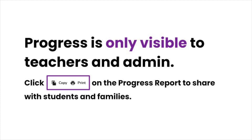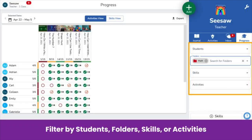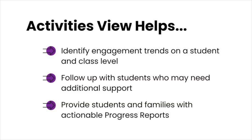Note that progress is only visible to teachers and administrators. To share progress with students and families, click copy on the progress report and paste it into an email or document. You can also filter activities by students, folders, skills, or activity. Progress activities view helps identify engagement trends, helps you follow up with students who might need more help, and provides students and families with actionable progress reports.